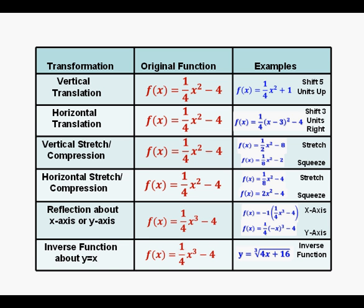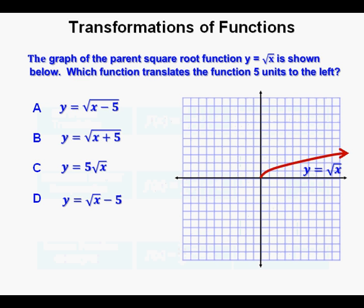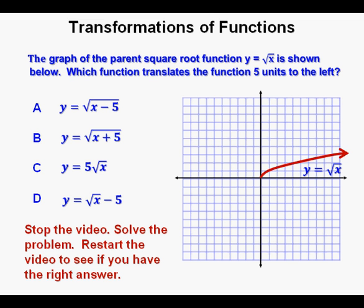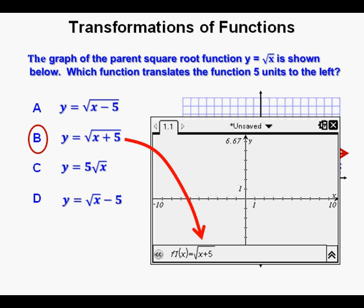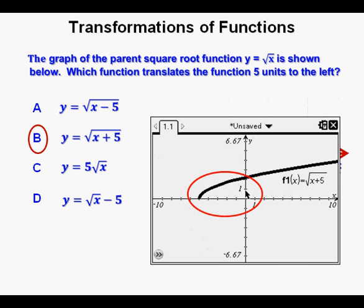Here is a table that summarizes all the transformations we've done in this lesson. I'll pause a few seconds so you can write them down if you'd like. Now a few problems to test understanding. The graph of the square root parent function y equals the square root of x is shown. Which function translates this function 5 units to the left? The correct answer is b. Here's answer b entered into the TI-Nspire calculator and graphed — we see the graph shifted 5 units to the left, confirming b as correct.